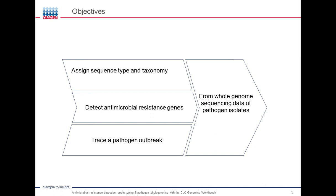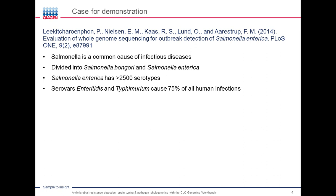Qiagen Bioinformatics offers a comprehensive set of tools for microbial genomics. During this session, I will demonstrate the tools needed for analyzing whole genome sequencing data from pathogens for taxonomic identification of an isolate, assigning a sequence type, detecting microbial resistance markers, and tracing an outbreak via SNP-based analysis. For demonstration purposes, we have chosen the study: evaluation of whole genome sequencing for outbreak investigation of Salmonella enterica, published in PLOS ONE. Salmonella is a common cause of infectious diseases, and the genus is divided into Salmonella bongori and Salmonella enterica. Salmonella enterica alone has more than 25,000 different serotypes and is the cause of more than 75% of all human Salmonella infections.